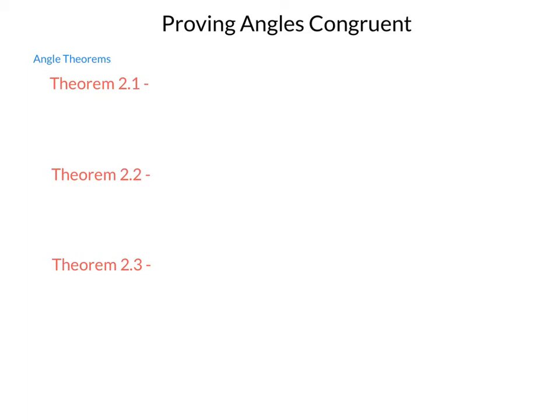We are going to have five theorems in this lesson. Here are our first three. Our first one, theorem 2.1, which is also called the vertical angle theorem, simply states that vertical angles are congruent. It might be helpful to know exactly what vertical angles are.